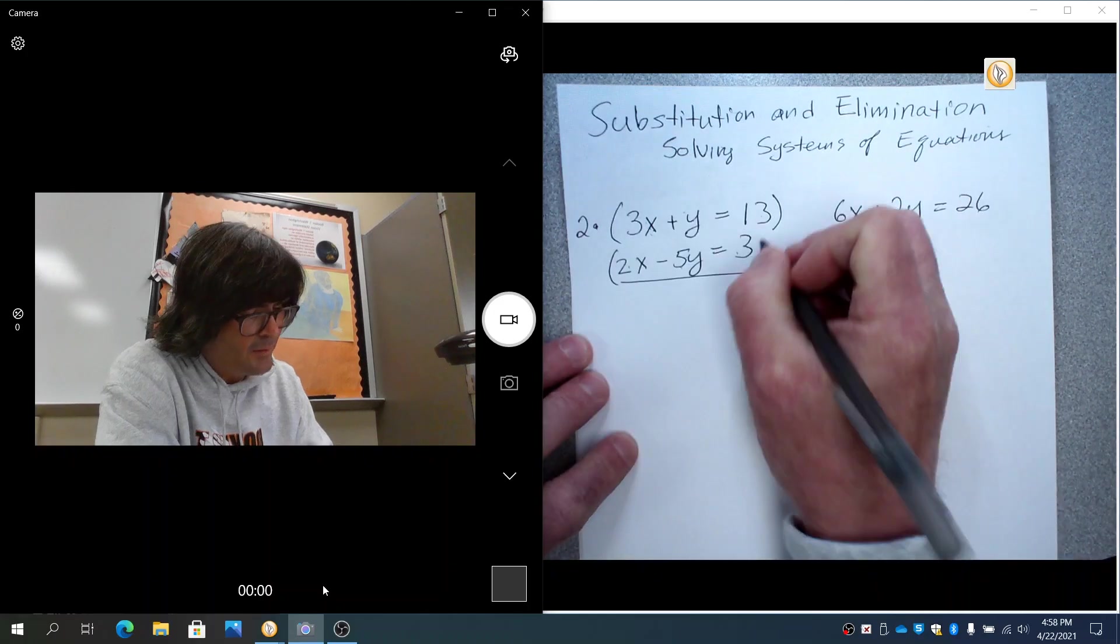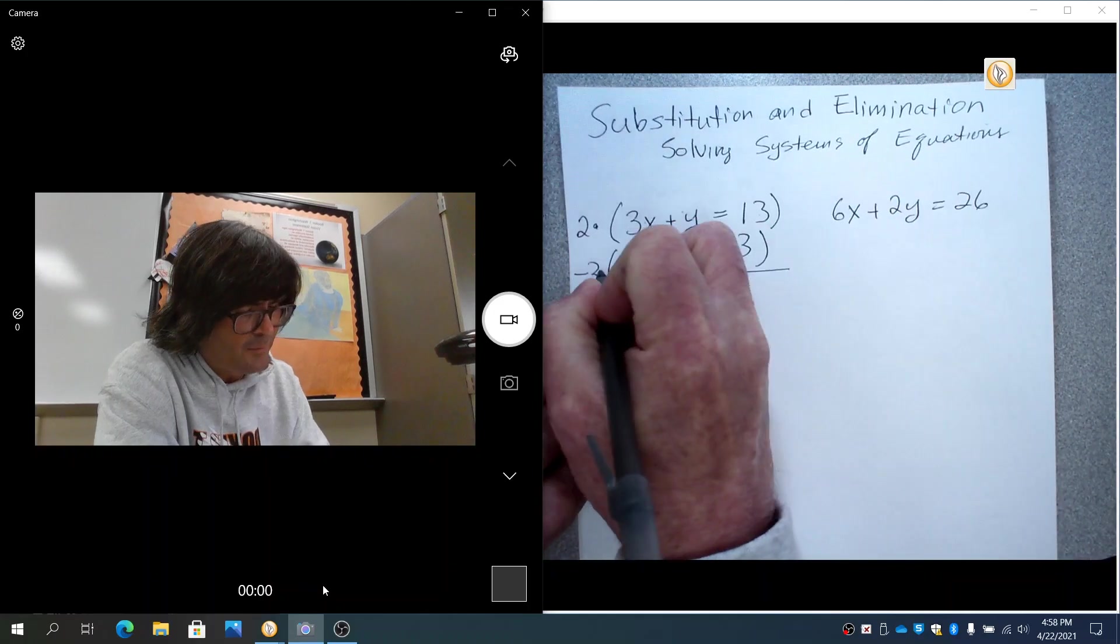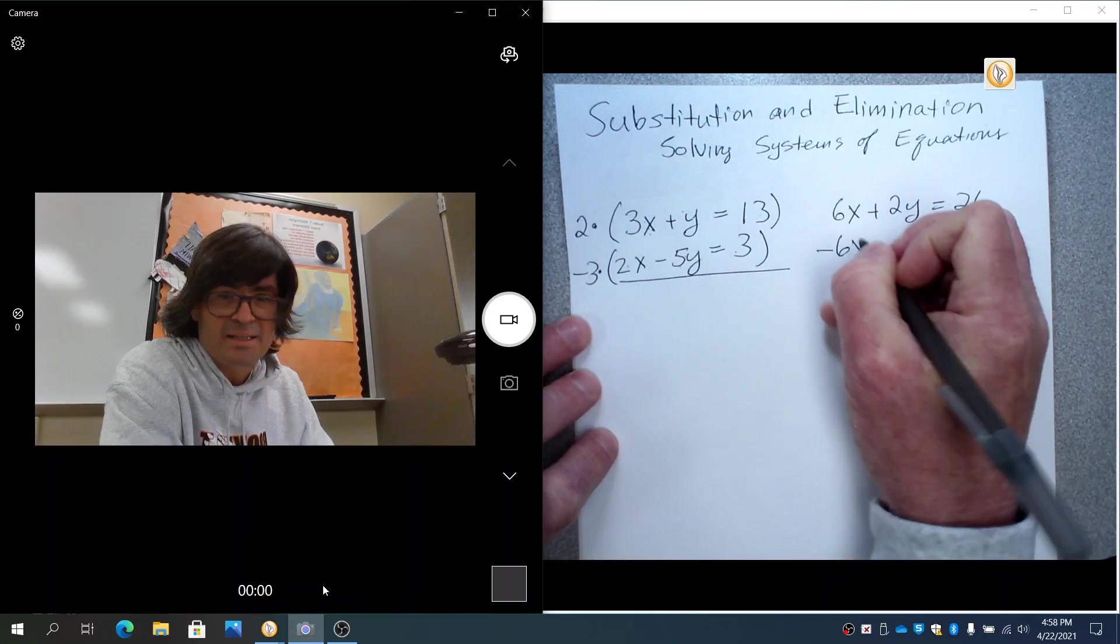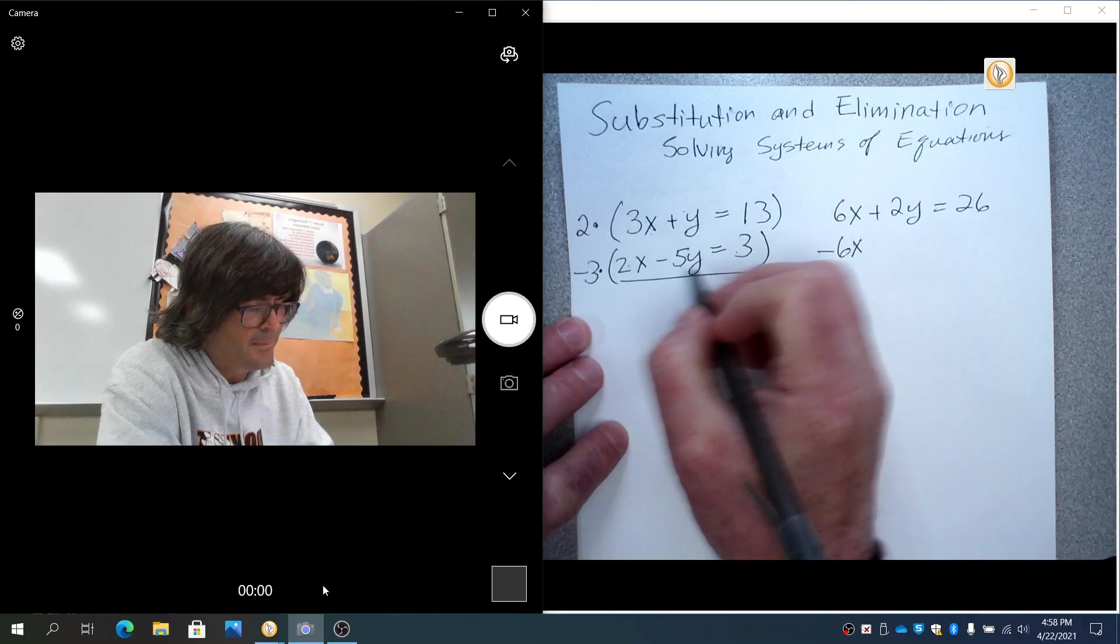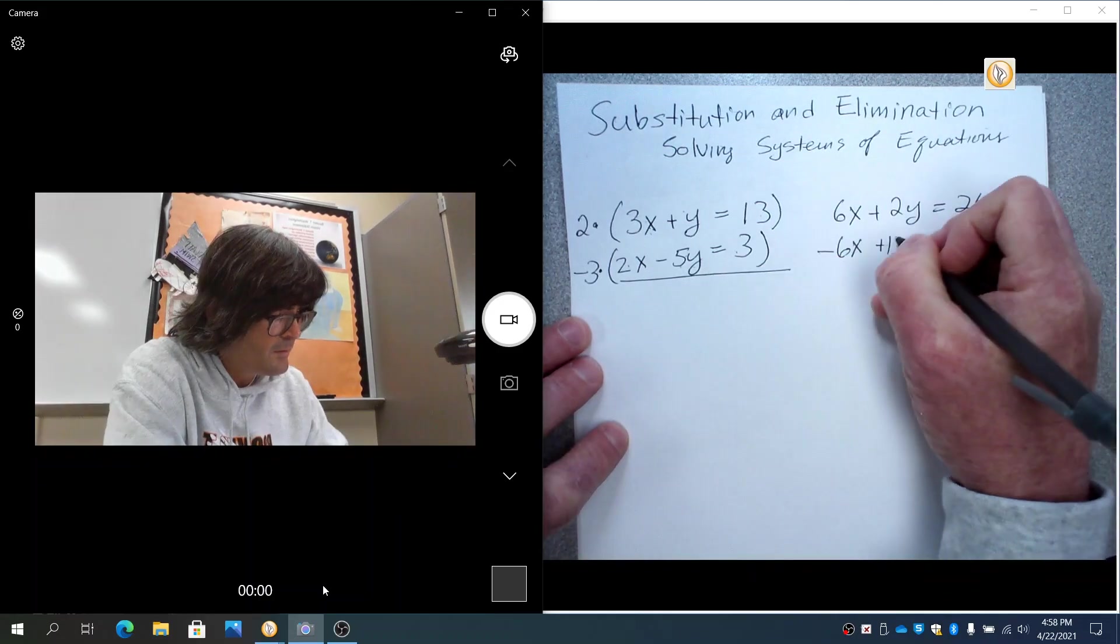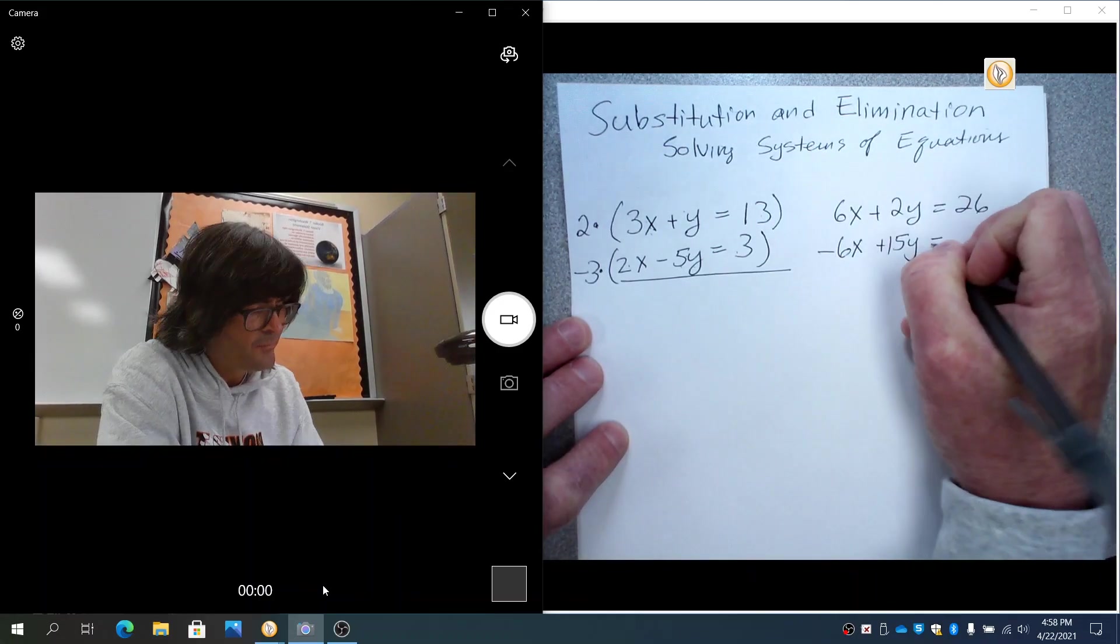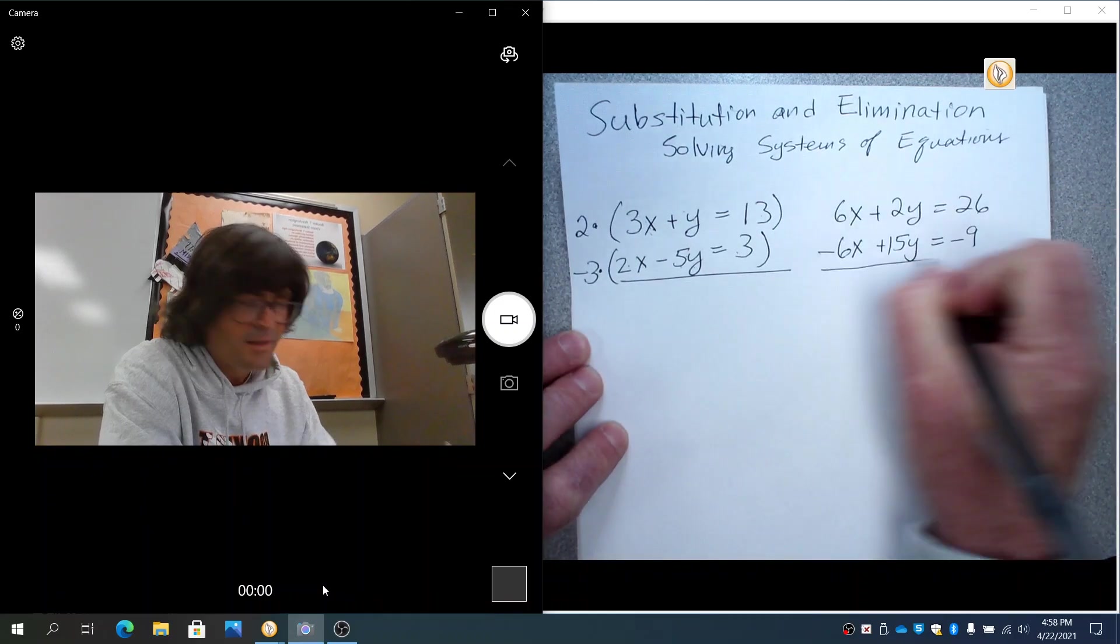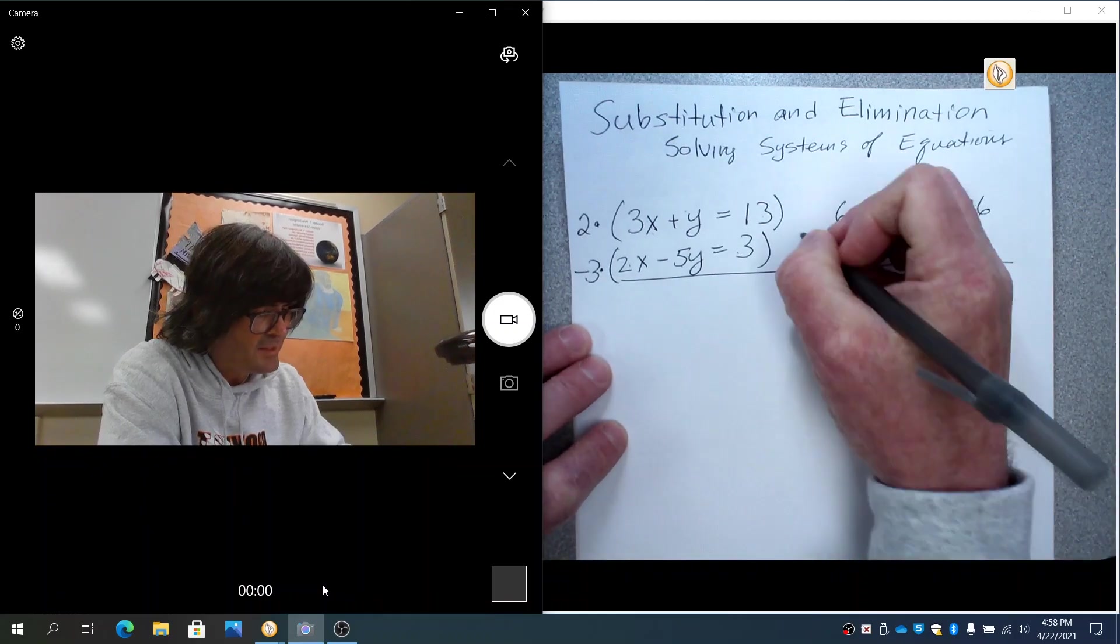Down below, I'm going to multiply this by negative 3 because negative 3 times 2x makes negative 6x. Negative 3 times negative 5y makes 15y. Negative 3 times 3 makes negative 9. And then you can add these together.